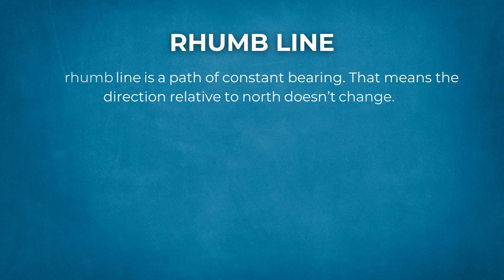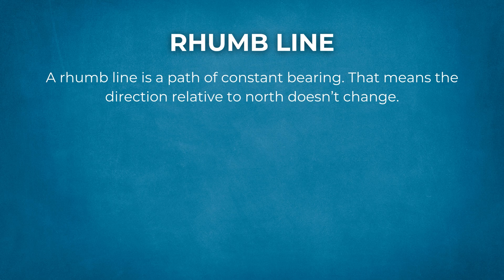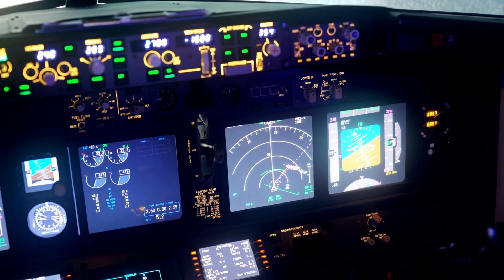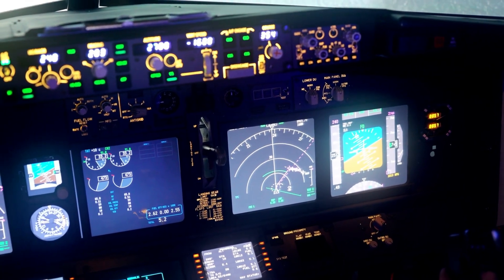Let's come back to the idea of rhumb lines for a moment. A rhumb line is a path of constant bearing — that means the direction relative to north doesn't change. On a Mercator map, it looks like a straight line. These routes were historically easier to navigate using simple compasses and charts. But over long distances, a rhumb line is longer than a great circle route. So while it's easier to draw and understand, it's less efficient. That's why modern aircraft navigation systems favor great circles unless restricted.